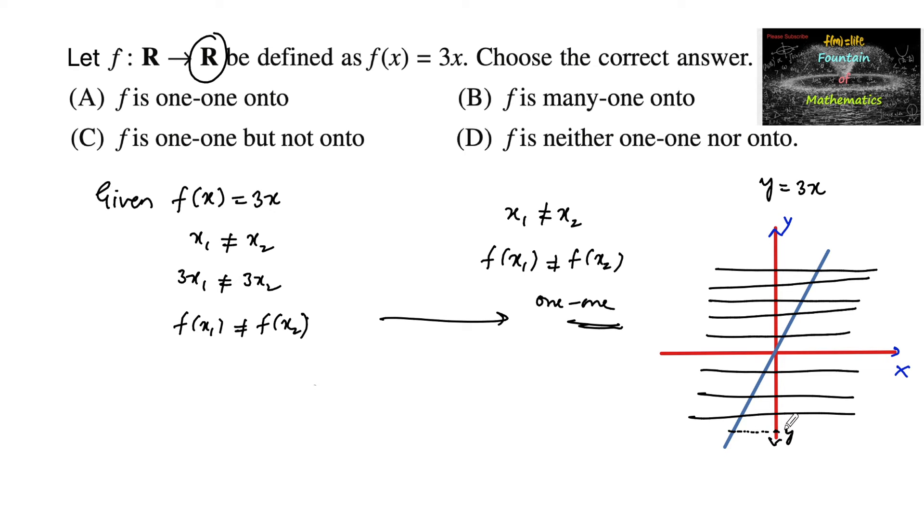That is, y is the image of some x. Or in general we can say that let f(x) equals y for some y belongs to real numbers. Then that is 3x equals y, which implies x equals y upon 3, which is also a real number. For some y belongs to R there is some y upon 3 which is also a real number such that f(x), that is 3 times x, equals 3 into y upon 3, which equals y.